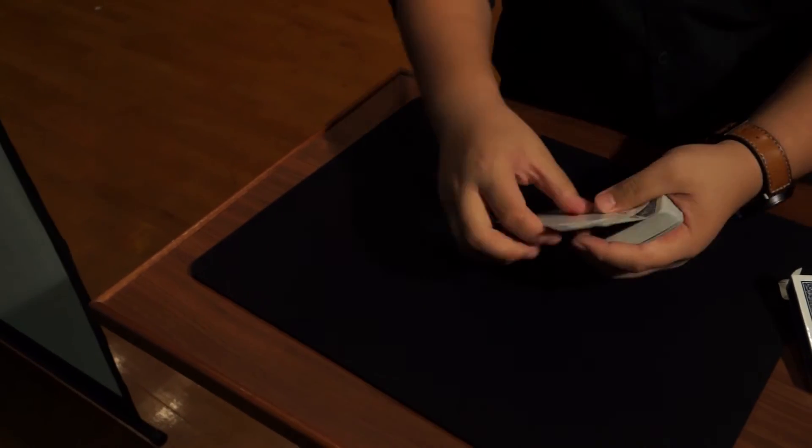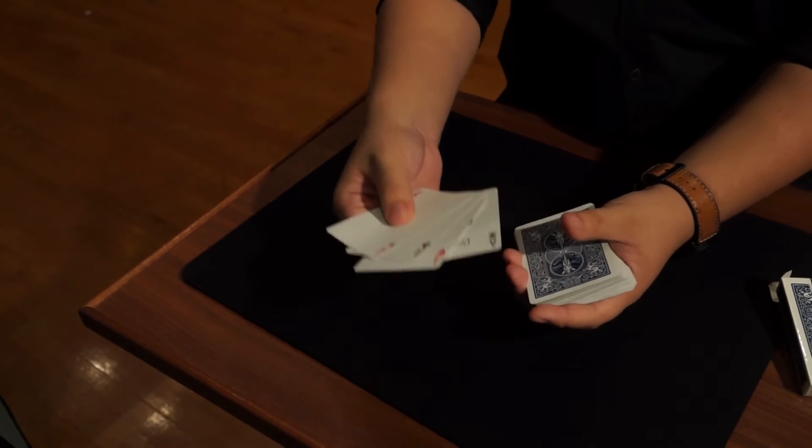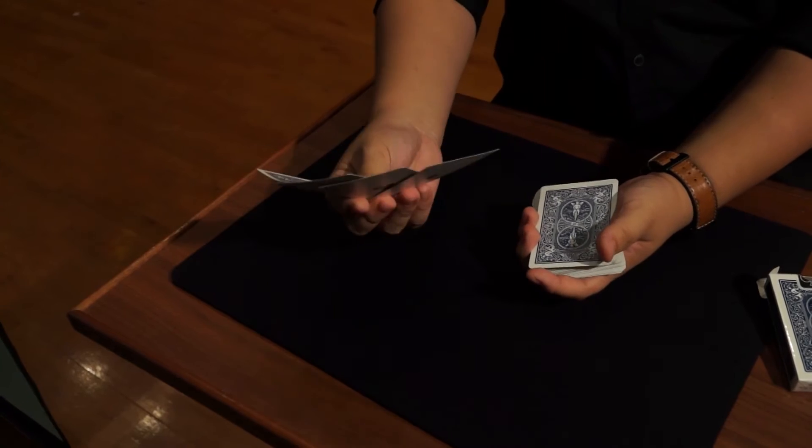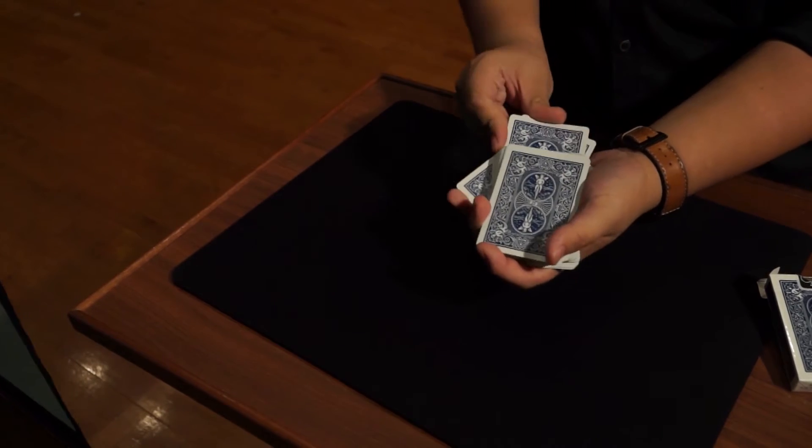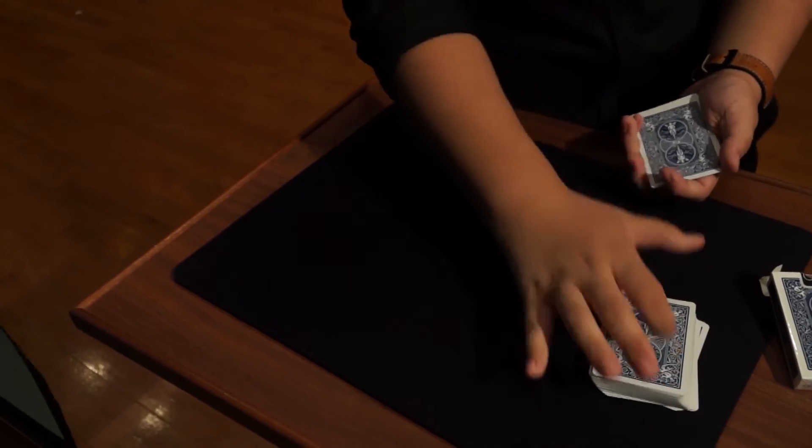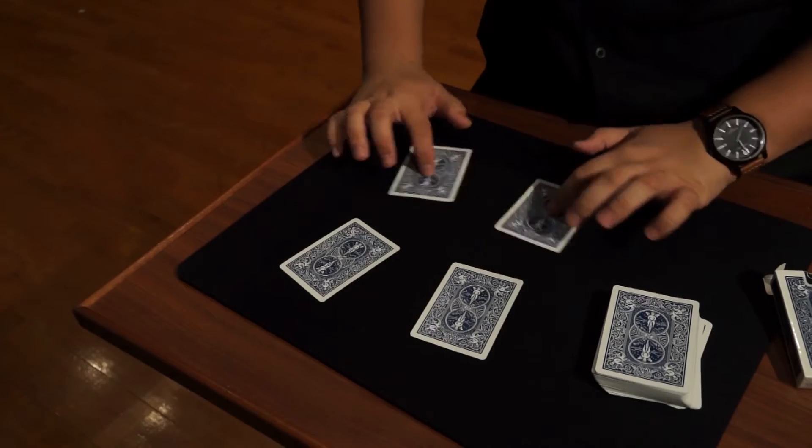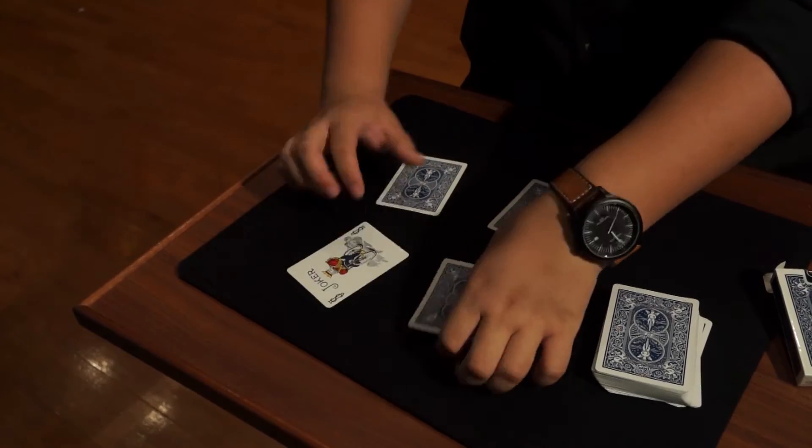Every time I perform this trick, people ask me, are these the aces? Or are they the kings? Or are they even cards at all? Well I tell them, yes, there are the aces, there are the jokers, there are the kings. They are actually everything. But if I put them back to where it was, give them away, we have 4 jokers again.